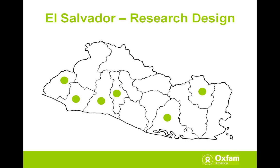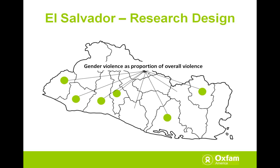Coming back to our example, the coalition came up with ten common impact indicators across these domains, and we had the task of evaluating them in a way that could bring out their interrelationship. We came up with three main research pathways. The first involved information across all municipalities that we could get from document review and available statistics — for example, gender-based violence as a proportion of overall crime.